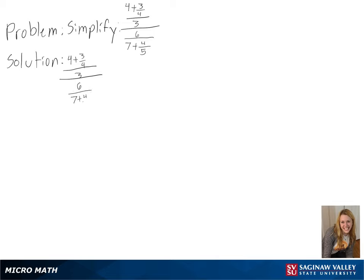The first part of our solution is to change the fractions in the numerator and denominator so that they have a common denominator. In this case, the common denominator is 4 in the numerator and 5 in the denominator.